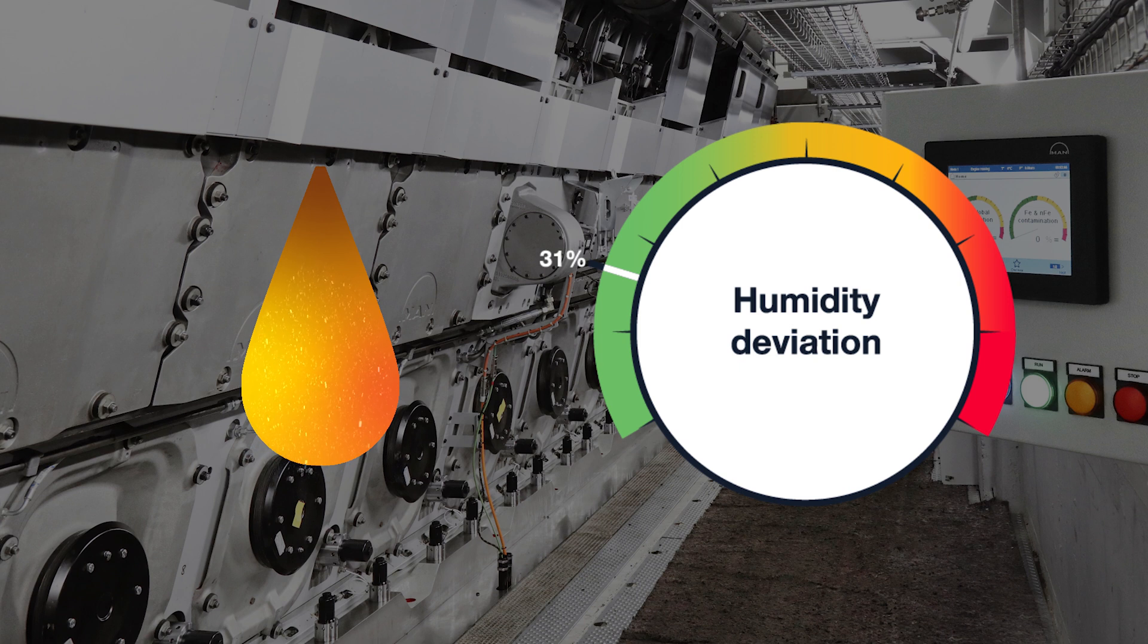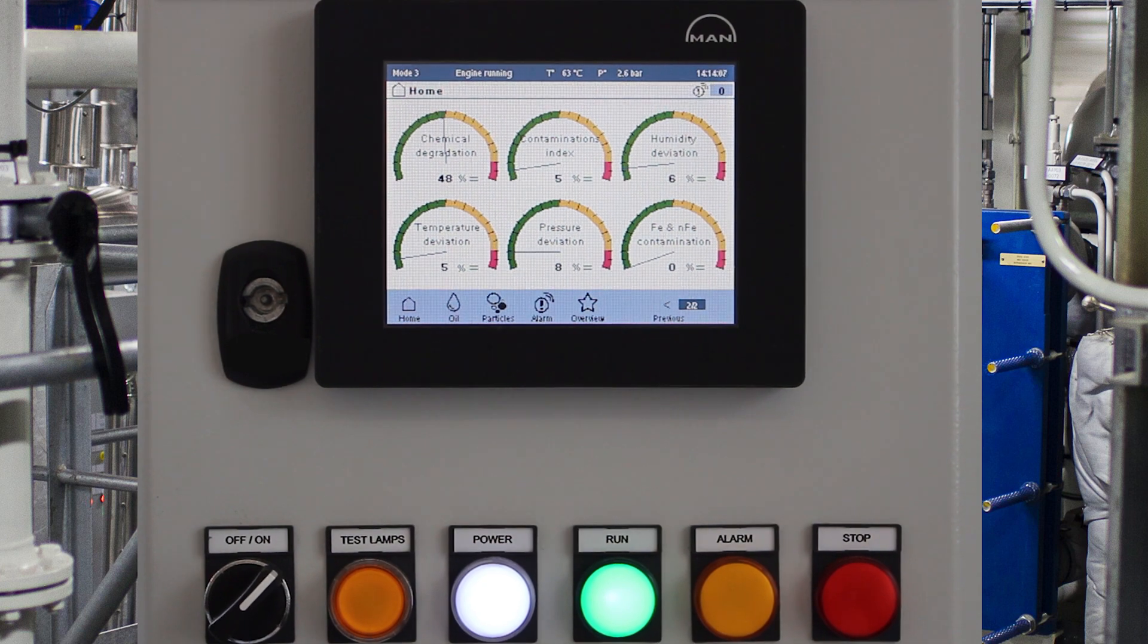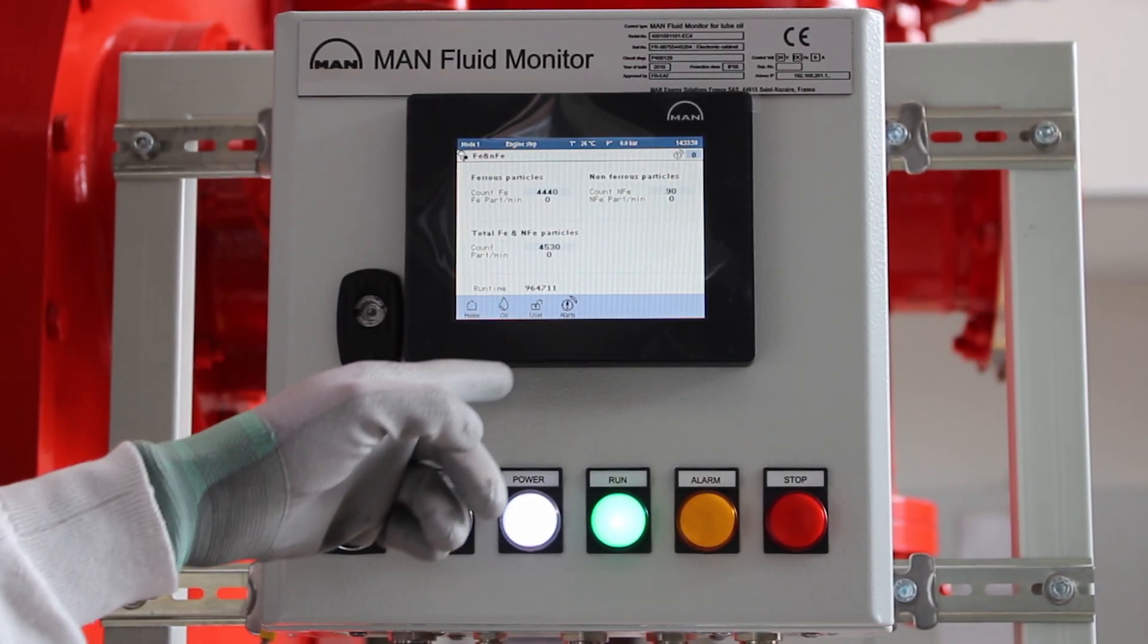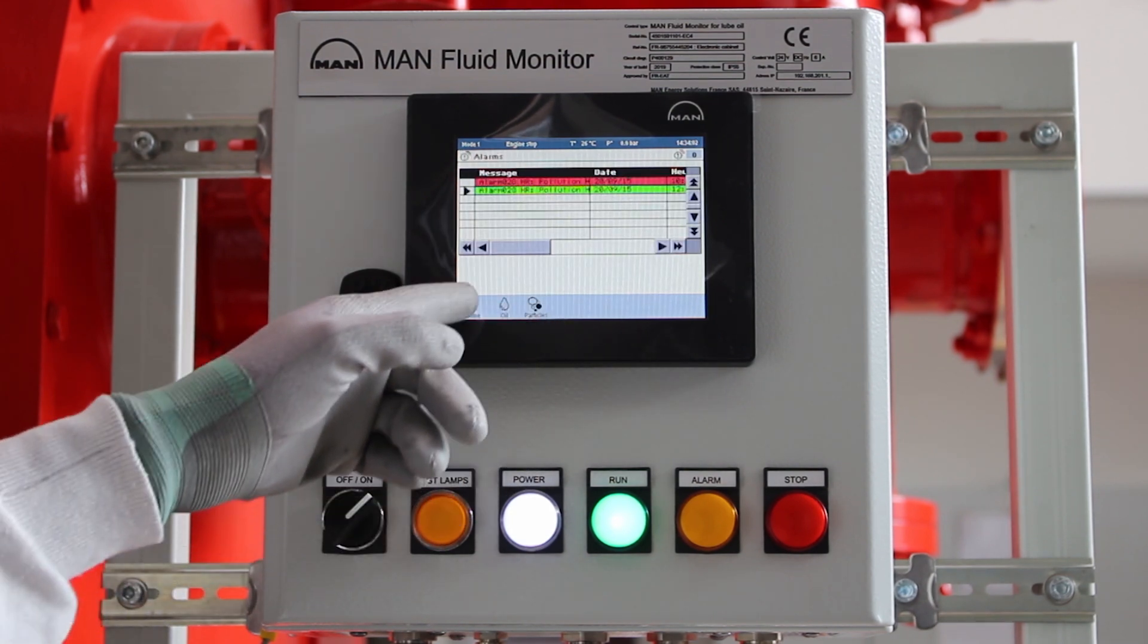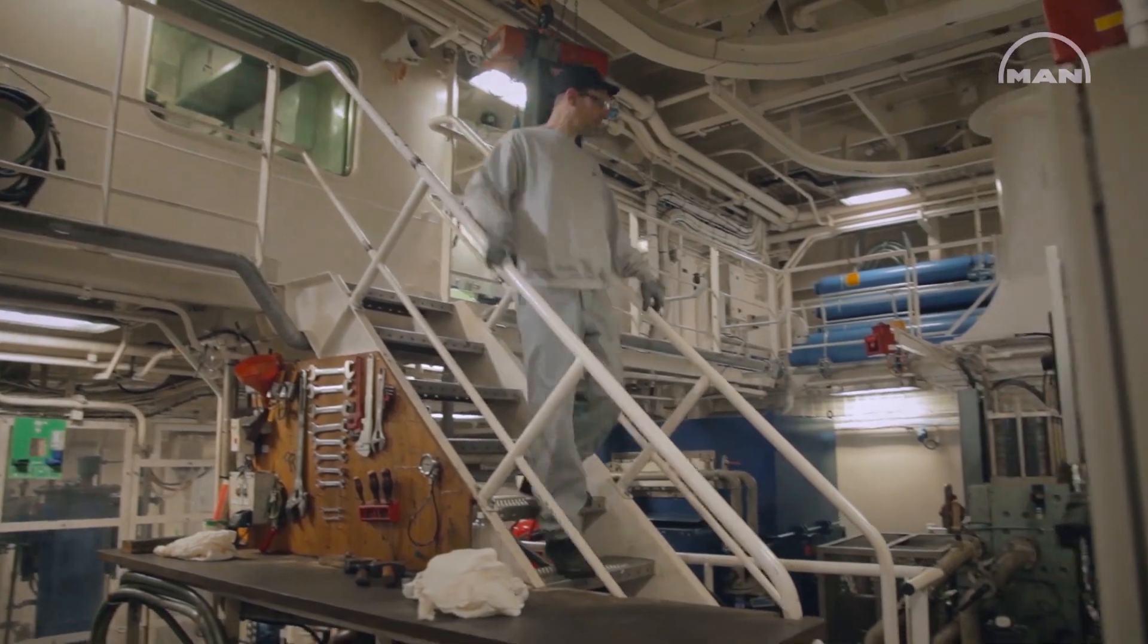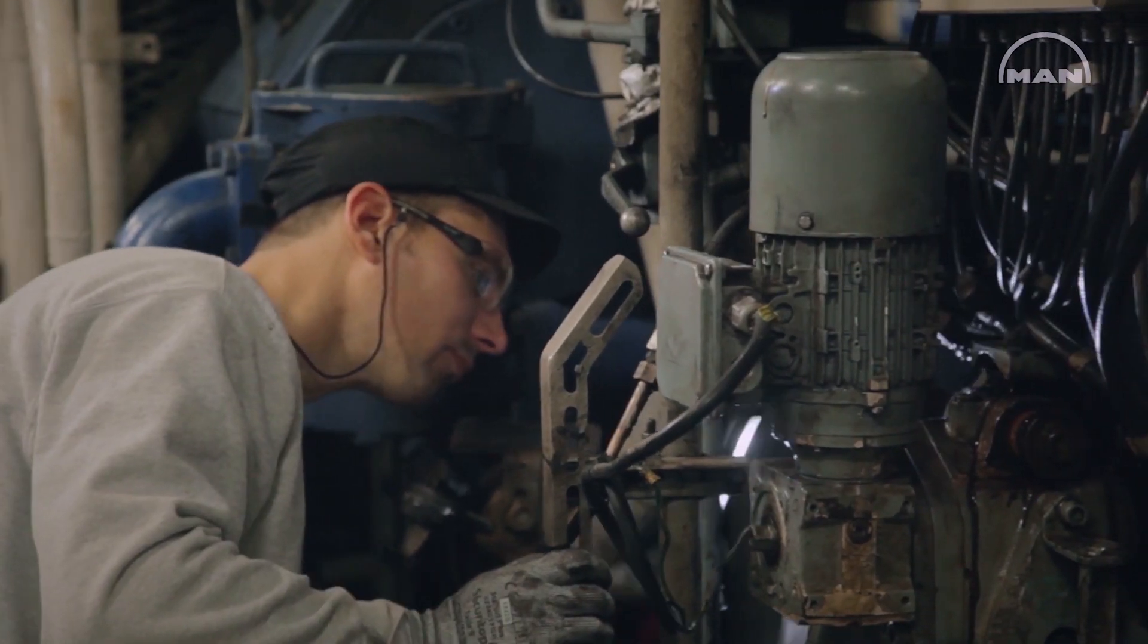MAN fluid monitor for lube oil continuously detects lube oil contamination. Thanks to deviation monitoring, early detection of any deviation during engine starting or running sequences is essential for the engine itself and its auxiliary systems.